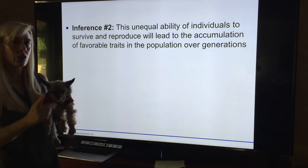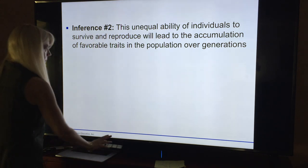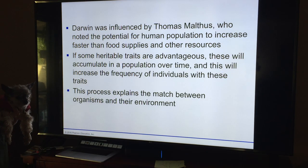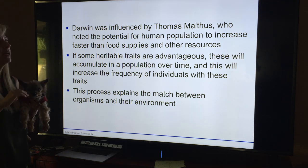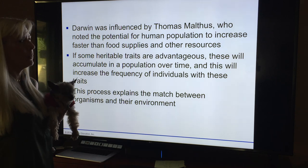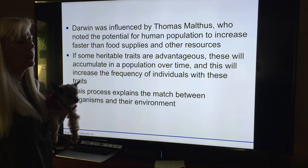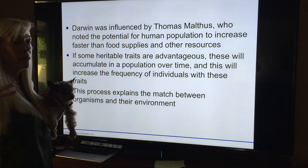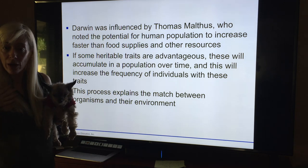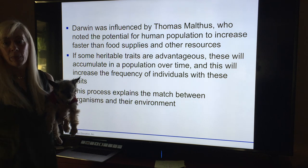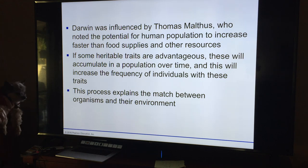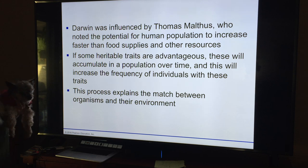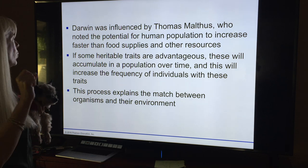Remember way back to bacteria: they just do cloning, so in evolutionary adaptation the original source of variation is mutation. If you're a single-celled organism, that's the only way you get genetic variation. Then once we get into sexual reproduction — Darwin was also influenced by Malthus, who noted the potential for human population to increase faster than food supplies. Malthus said people would stop reproducing because we'd run out of food — we found out that's not true.